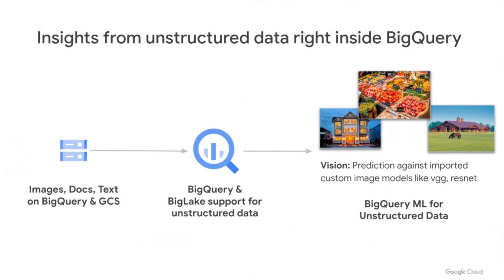Insights from unstructured data — this is the big news for us today. So far, BigQuery has always been a leader in managing structured and semi-structured data. Thomas Kurian announced today that BigQuery can now handle unstructured data such as images, text, and docs. BigQuery ML will now help you unlock that value: you can do model predictions with vision to figure out objects in an image by bringing in your own custom TensorFlow-based vision models to do object detection and other vision capabilities. Candice is also going to show you a demo of this particular feature.